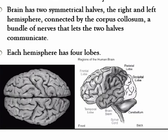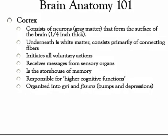The left and right hemispheres each have four lobes. The outer part of the brain is the cortex, which consists of different kinds of neurons — gray matter — and this forms the surface of the brain. Underneath this is a white matter consisting primarily of connecting fibers, which initiate all voluntary actions, receive messages from sensory organs and different parts of the body, and serve as a storehouse of memory.